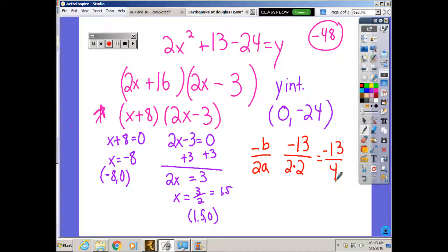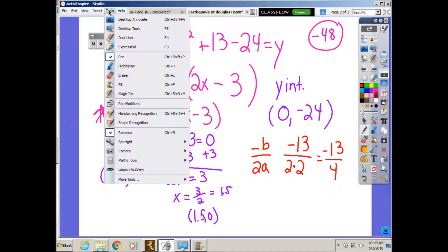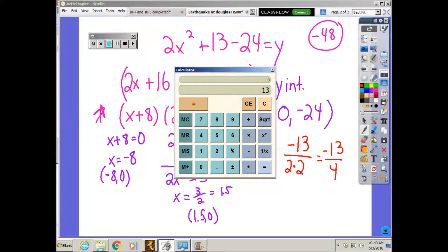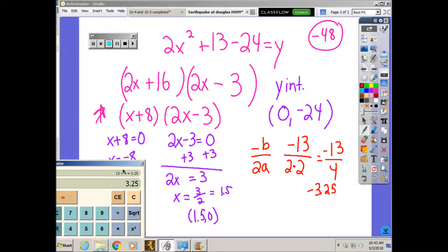So you either would have had an axis of symmetry of negative 13 over 4, or you could have put it into the calculator. And you would get negative 3.25. It's a line. It's not an ordered pair. I said repeatedly, this was a line.